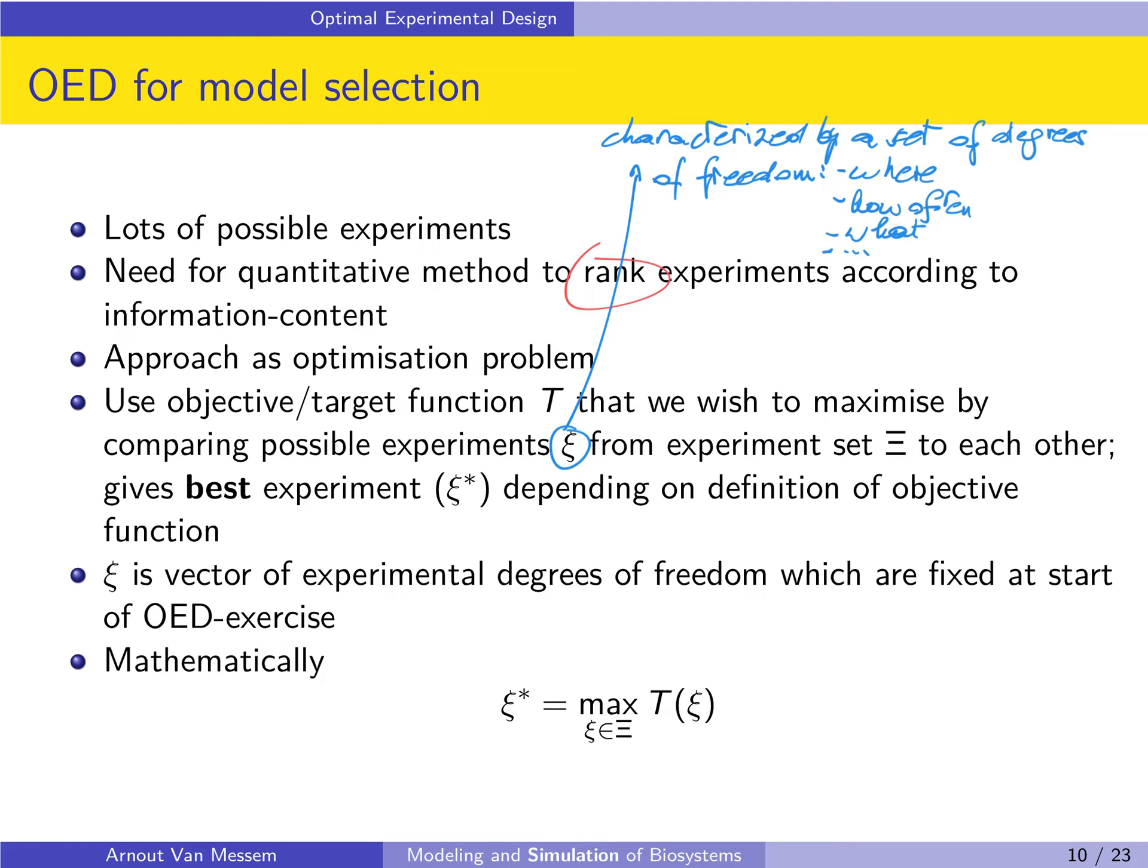As said, ξ is a vector of experimental degrees of freedom, and this vector is fixed at the start of the OED exercise, fixed in the sense that we will always consider the same degrees of freedom over the different models, but we will be varying the values of these degrees of freedom. Mathematically, ξ* the best experiment is the experiment ξ in the set of all experiments Ξ which maximizes the objective function T(ξ).